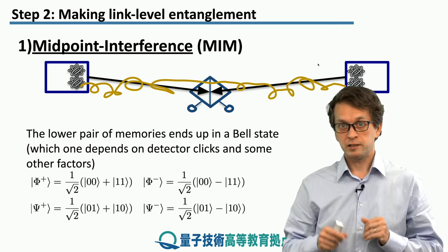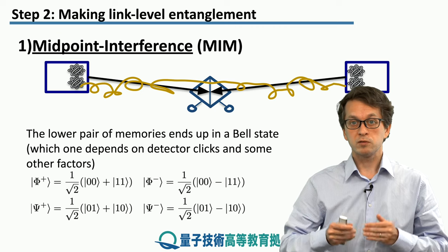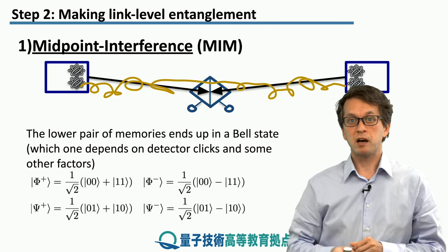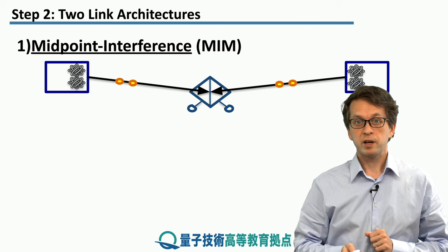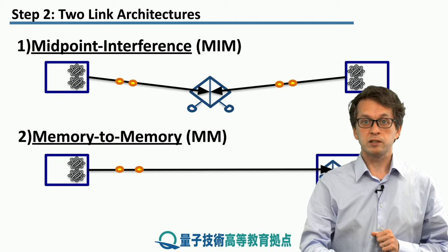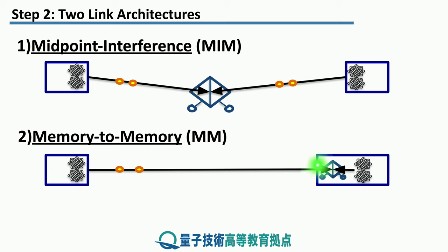This way, we can establish link-level entanglement between the quantum memory in one node and the quantum memory in the neighboring node. We will see the mathematical details of exactly why and how this works in the next step, where we consider using this method to establish entanglement between far-separated network nodes. Another method is direct memory-to-memory, used when the distance between quantum memories is not large or fiber attenuation is very low — in that case, photons can be sent directly to the memory, with the Bell State Analyzer included in the network node.